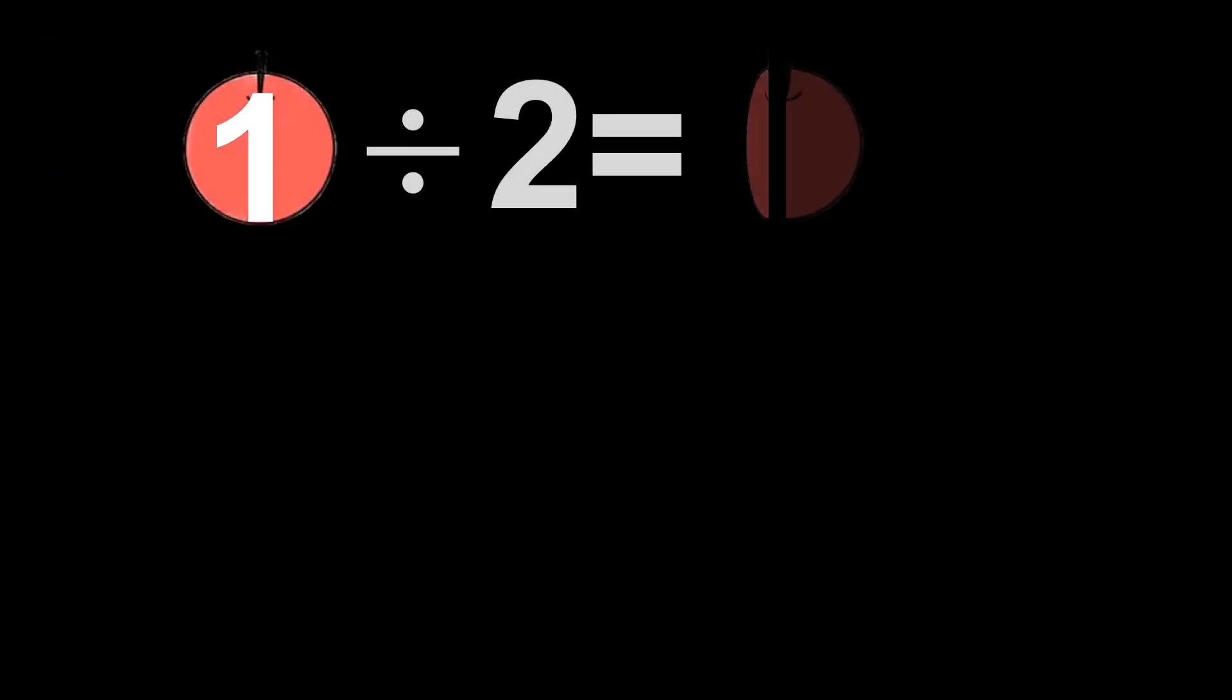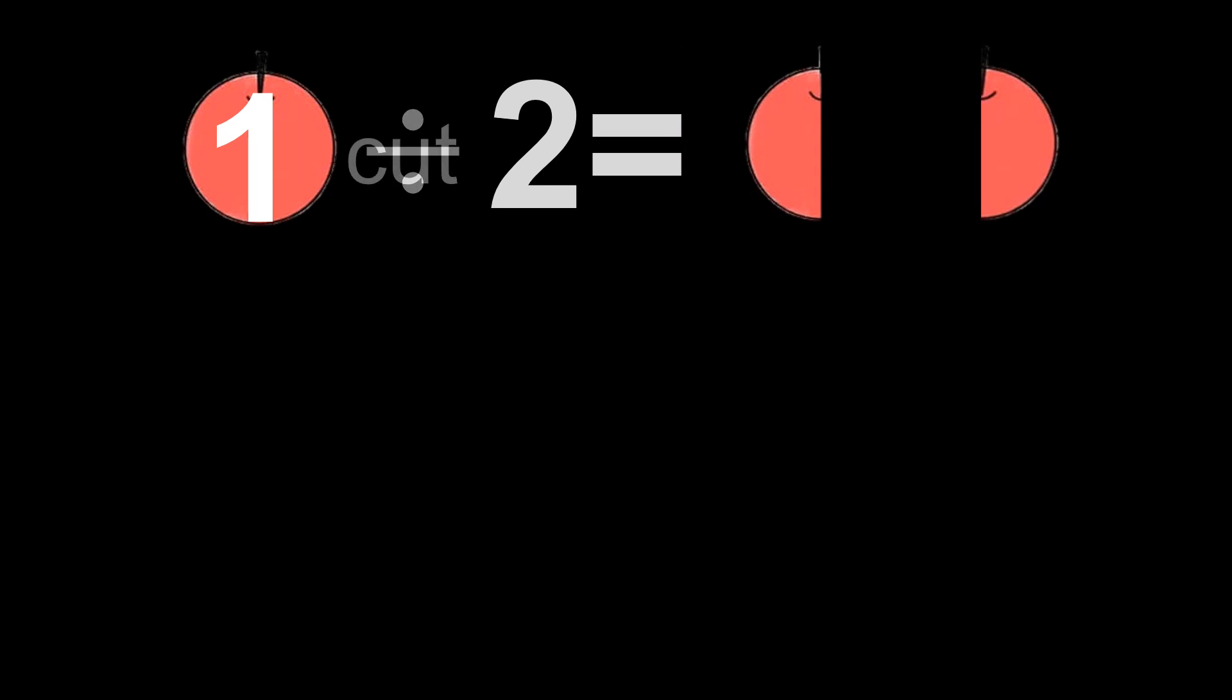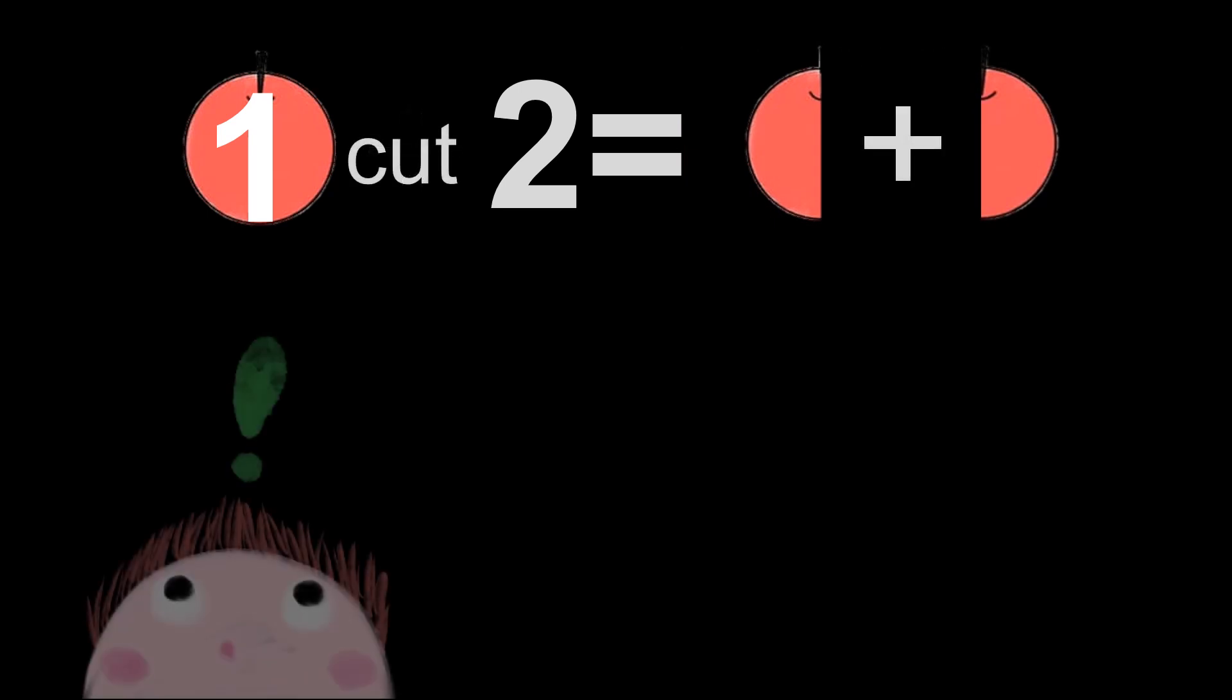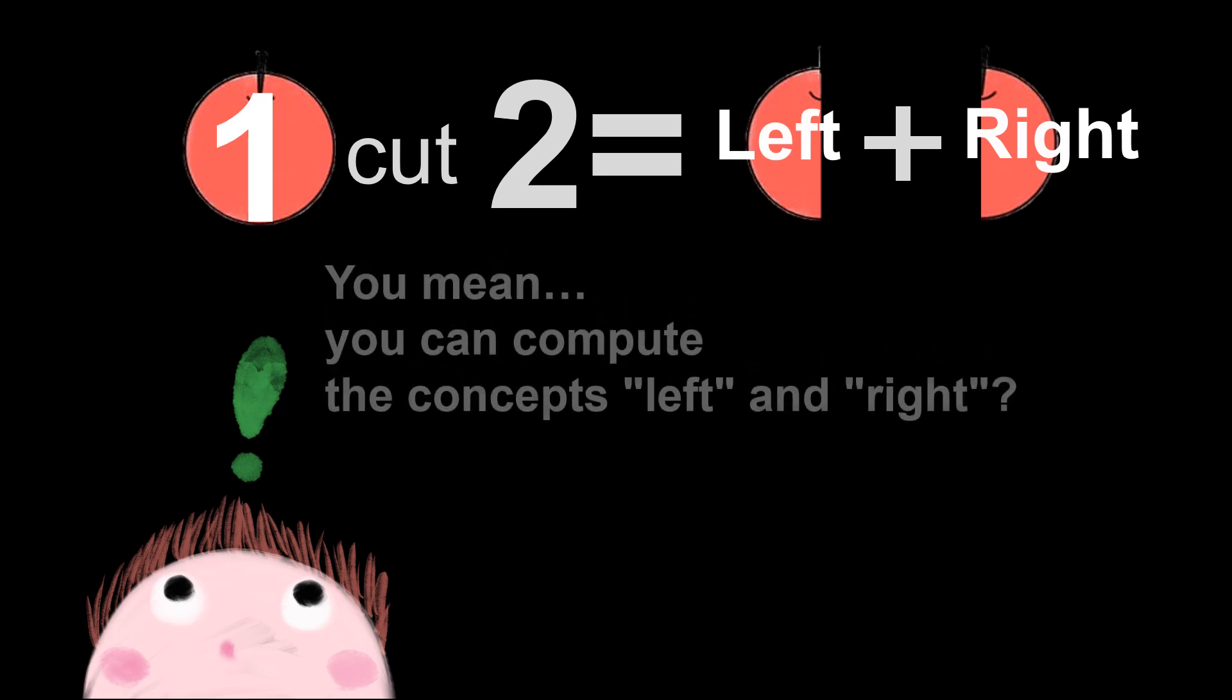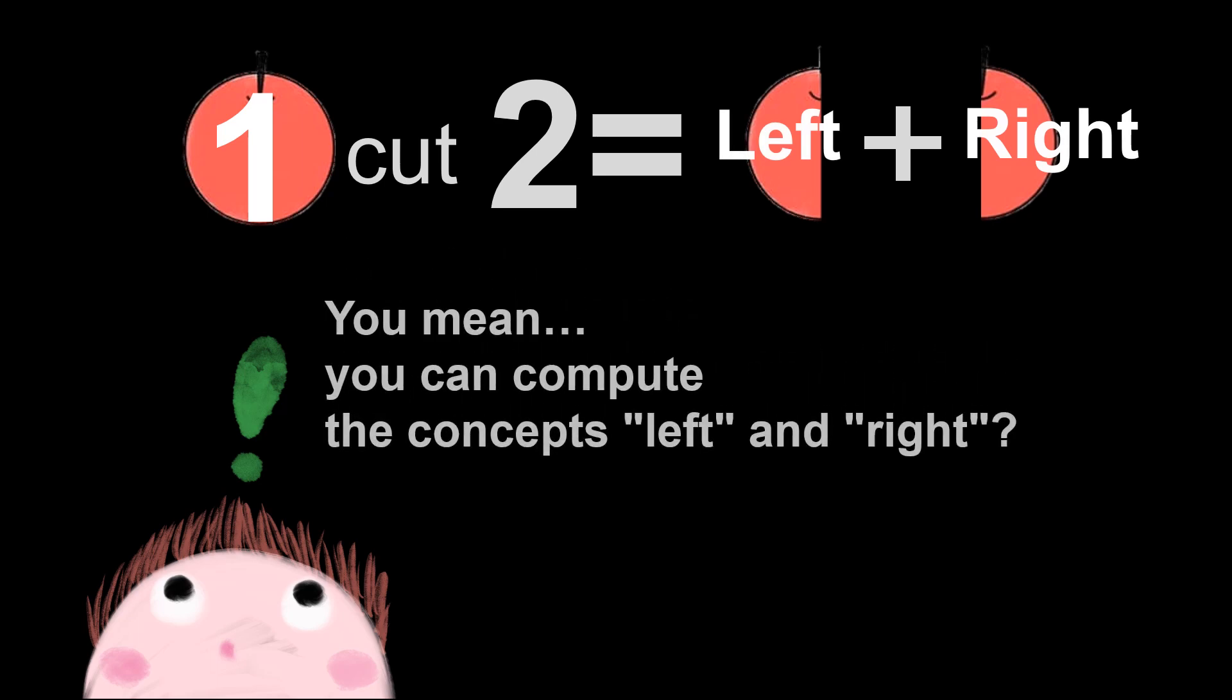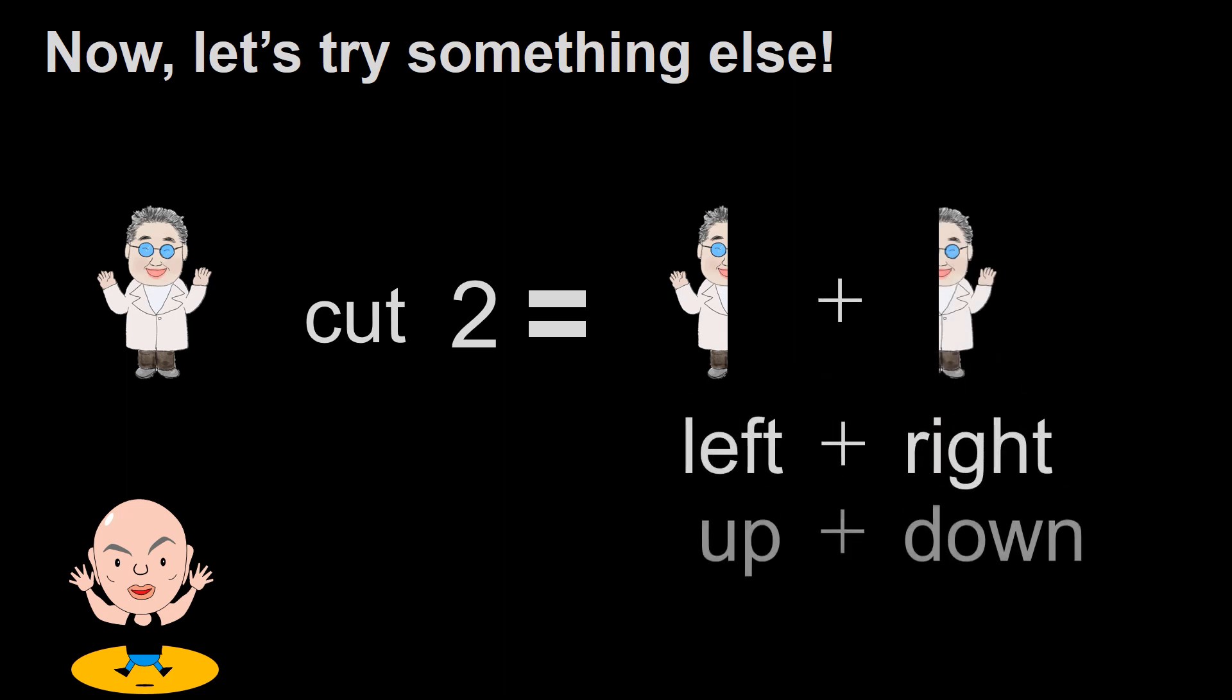An apple cut two is two pieces: left and right. You mean you can compute the concepts left and right. Human cut two is left body plus right body. Left plus right. Up plus down.